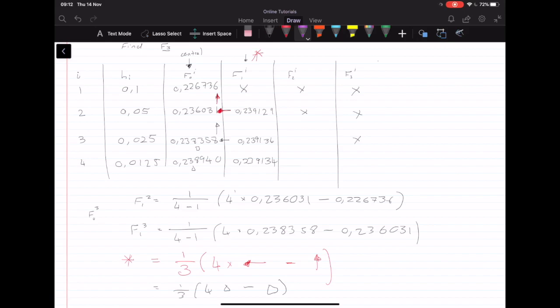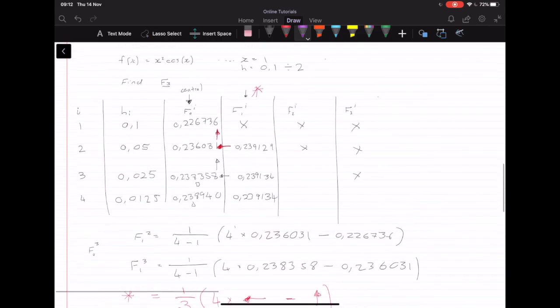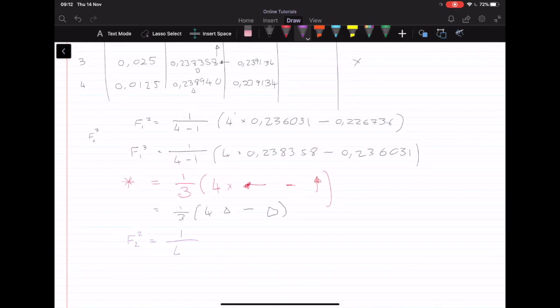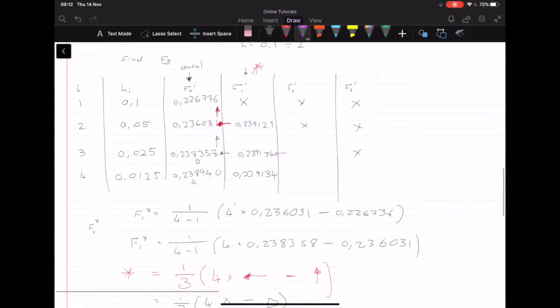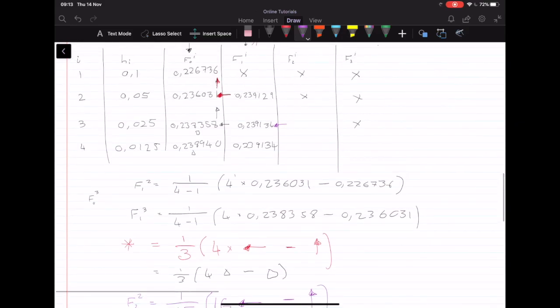Now we go on to the second column. And the second column actually follows a similar pattern. F²_₂, the first one we're going to be looking for, equals, instead, so we have 1 over 4² minus 1, which equals 15. So we have 1 over 15. 4² is 16. And then once again, we have the value next to us, so the value that way, minus the value above it. And that pattern continues for this column. So we have the answers to this is 0.239134 and 0.239134. Again, all I did was 1 over 15, 16 times that number, times the value above it.